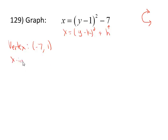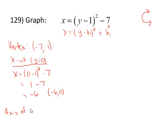Next we find the x-intercept by setting y equal to zero. Here, x will equal the quantity zero minus one squared minus seven. Negative one squared is positive one and one minus seven is negative six. So the x-intercept is at negative six, zero. The axis of symmetry is the horizontal line that runs through the vertex. Here, that's going to be at y equals one.